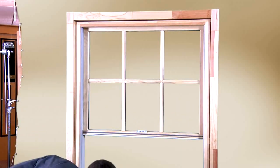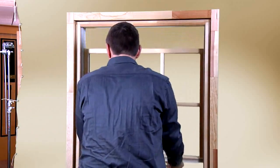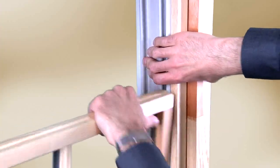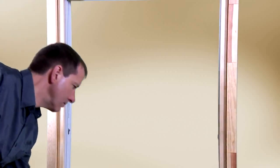With the lower sash tilted in, slide down the upper sash and like the lower sash, depress the flexible jam liner with one hand and pull the sash toward you with the other. Again, repeat the process on the other side.